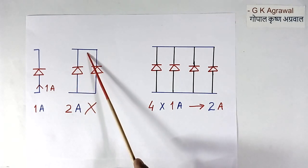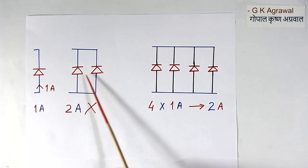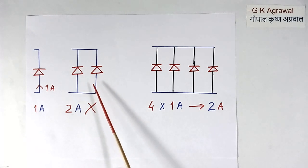Again in forward bias condition also, they will not have equal voltage. They will not have equal resistance. So current sharing will not be equal. One may have less, one may have more.